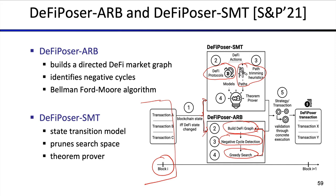We must be aware that trimming heuristics might cut some of our revenue. Unfortunately, path trimming is necessary because theorem provers are quite limited in their ability to solve problems, depending on the SMT solver. Then you can plug everything into the theorem prover and let it run. There are various theorem provers out there — Z3 is a potential one, Souffle is another one.